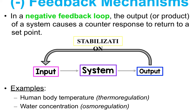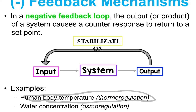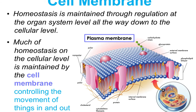Examples of negative feedback include body temperature thermoregulation, water concentration osmoregulation, and blood sugar regulation. These are typically how the body does a negative feedback loop. Thermoregulation refers to regular body temperature maintenance, not just the sweating example. At the cellular level, homeostasis is maintained by the cell membrane — the fluid mosaic model — which controls the movement of things in and out of the cell.